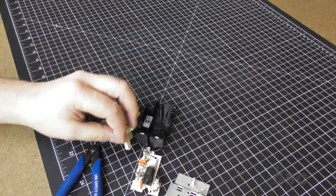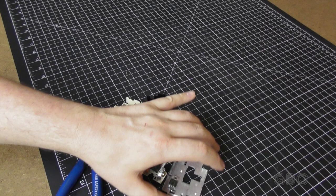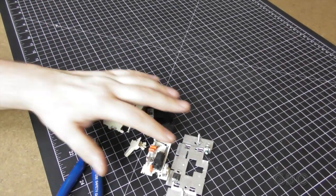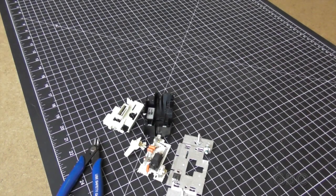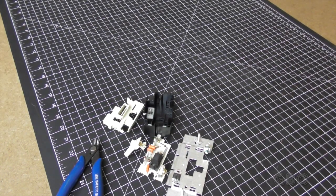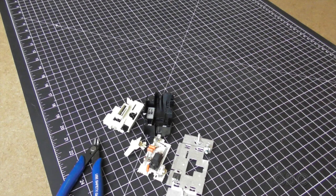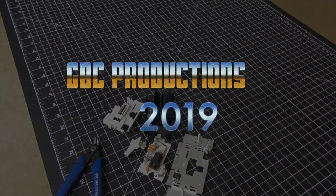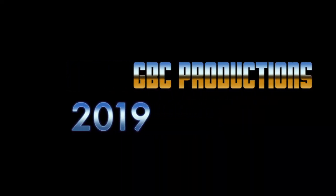So anyway that's what's inside an incandescent dimmer switch. Check out John Ward's channel if you want to see the waveform of a dimmer switch. Don't forget to subscribe for more. Mash that like button and comment below. Until next time this is Uncle D from GBC Productions signing off.